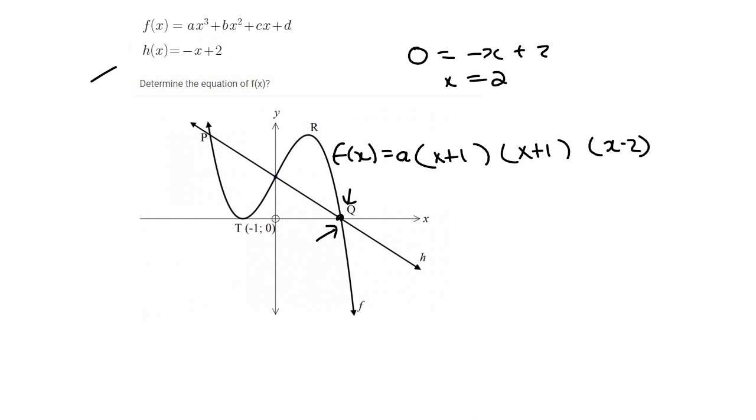Now to find a, we substitute another point that we haven't used yet. So we could find this point over here, because it's the interception of the straight line with the y-axis. And we have the straight line's equation. So we can make x zero like that, and that's going to give us 2. So the coordinates here would be (0, 2). But luckily, that point is also on the cubic graph, and so we can use it to find a.